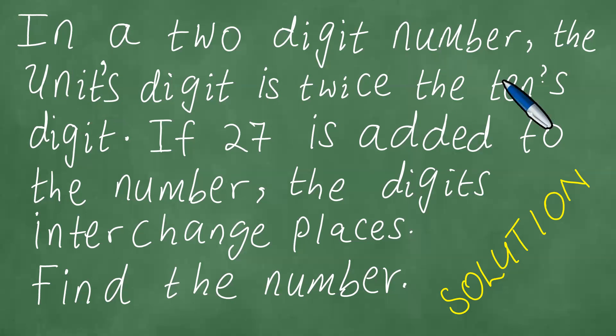In a two-digit number, the units digit is twice the tens digit. If 27 is added to the number, the digits interchange places. Find the number.